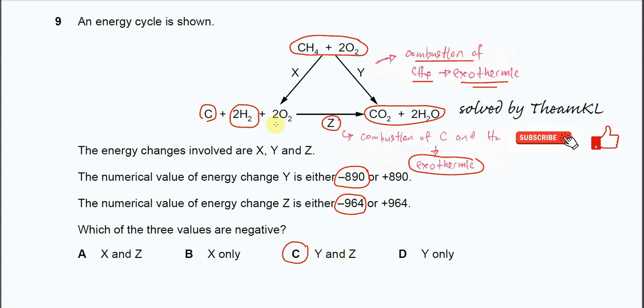If you want to know what is the enthalpy change of X, then let's look at the direction. The direction now is from the methane to form C and H2, oxygen is eliminated. Actually the reverse reaction is the formation of methane, so carbon with hydrogen forms methane.